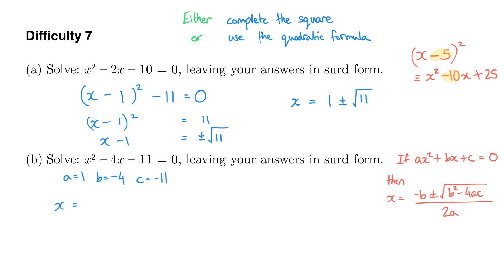So x equals negative b. Now negative negative 4 is positive 4, so we've got positive 4 plus or minus the square root of b squared. Now negative 4 squared is going to be positive 16, so I've got positive 16 there, minus 4 times a times c. So I'm going to have minus 4 times a. 4 times 1 is 4 times c. 4 times negative 11 is negative 44. So we've got 16 minus negative 44, and that's all over 2a. 2 times 1, which is 2.